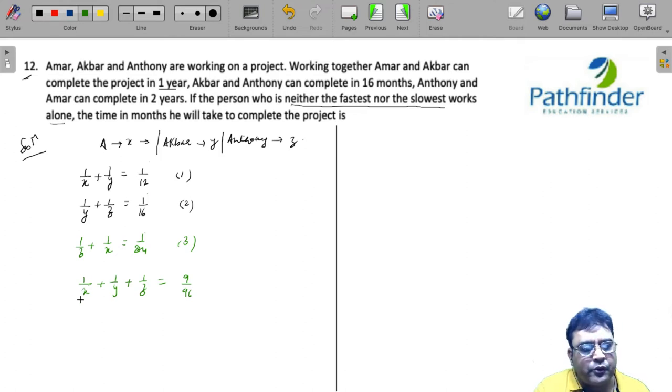On the left hand side, you will actually get 2 times 1 by X plus 1 by Y plus 1 by Z. So I take the two down on the right hand side. I will get 9 by 96. So the combined rate of work for all the three of them is 9 by 96.